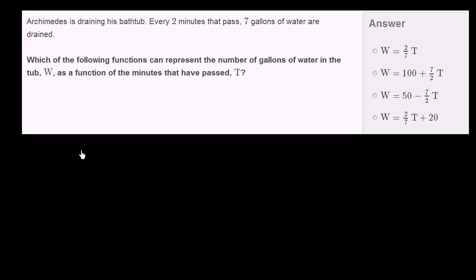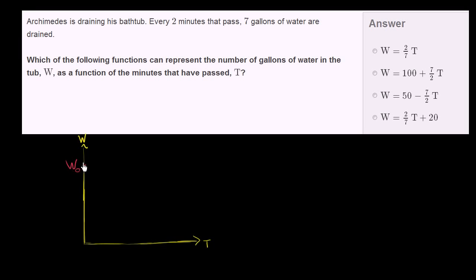Let's think about this visually. Let's plot the number of gallons of water we have on the vertical axis — that is a function of time. As time passes, we will lose water at a fixed rate. We're going to start with some initial volume of water in the tub, and they don't tell us what that initial volume is. Let's just call that capital W sub zero — the initial number of gallons, or the number of gallons at time equals zero.